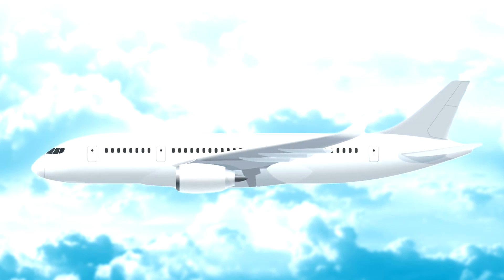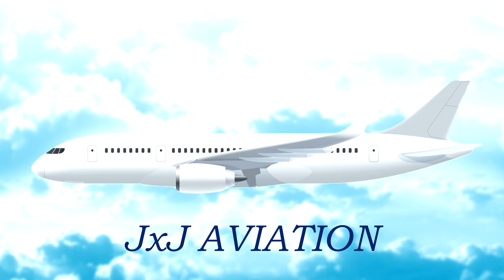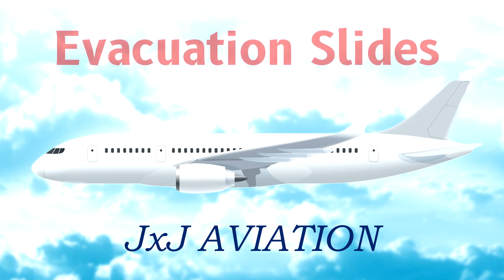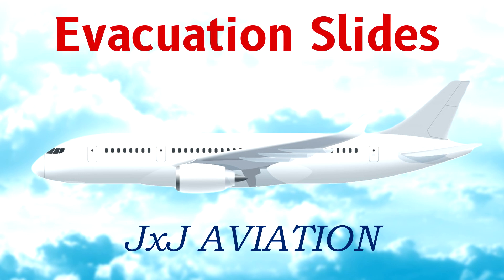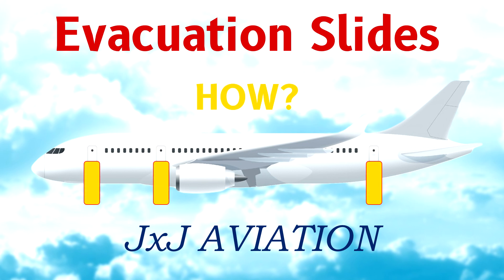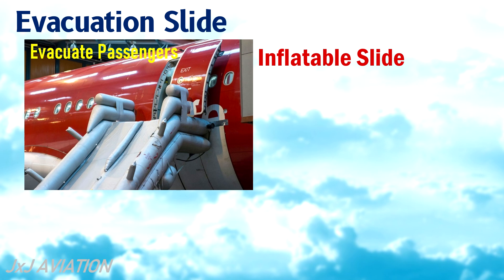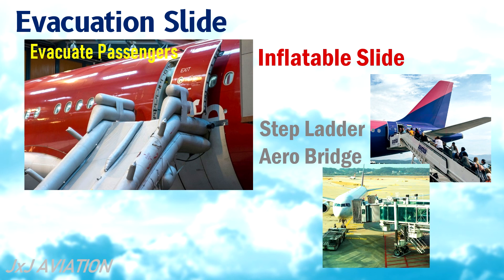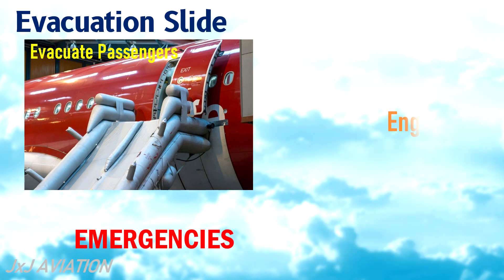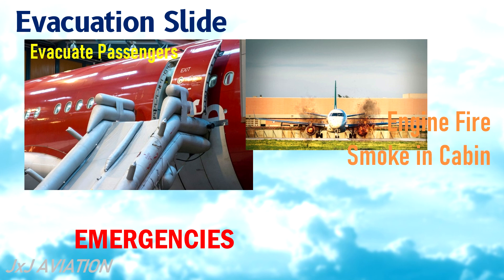Hello and welcome to GXJ Aviation. In this video, we will be looking at what are evacuation slides and how they function. An evacuation slide is an inflatable slide used to evacuate passengers on board an aircraft during certain emergencies, if a stepladder or an aerobridge is not available — during emergencies such as an engine fire, or smoke inside the cabin.